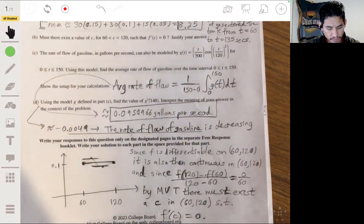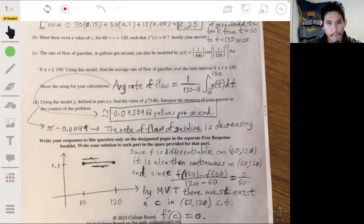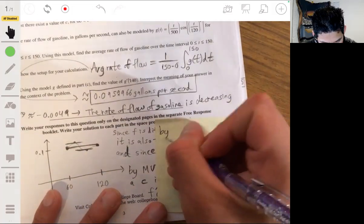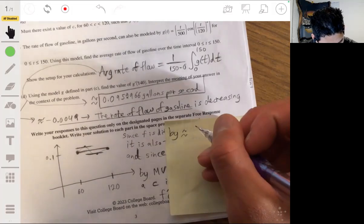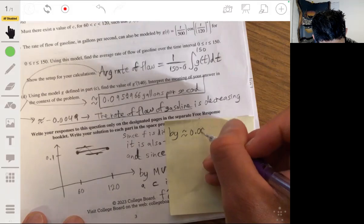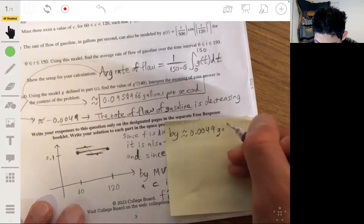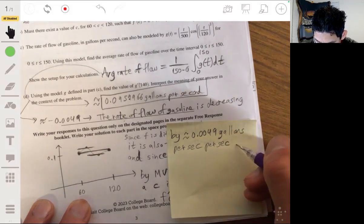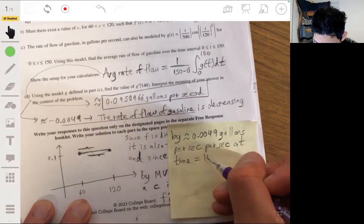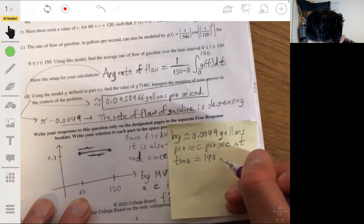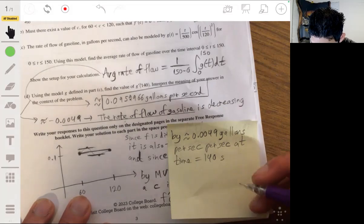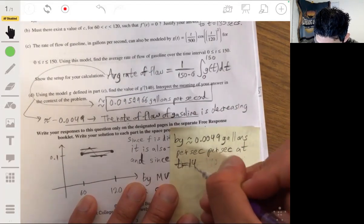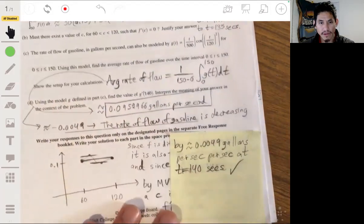All right. So we can say that the rate of the flow of gasoline is decreasing by about 0.0049 gallons per second per second at time t equals 140 seconds. And there you go, so that should work.